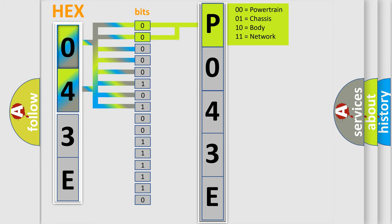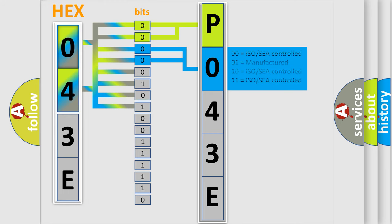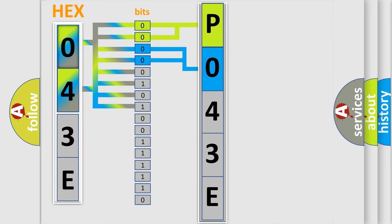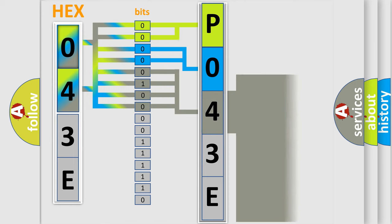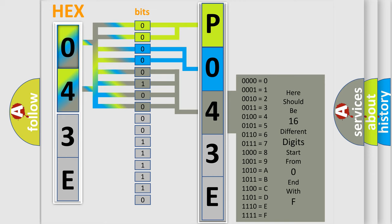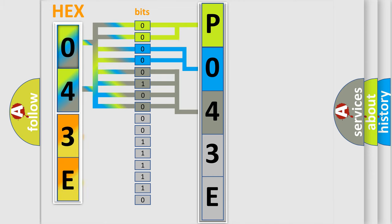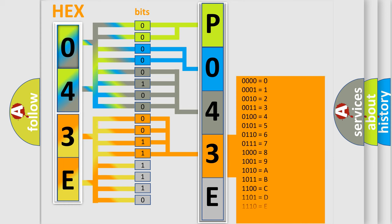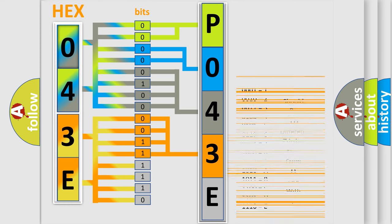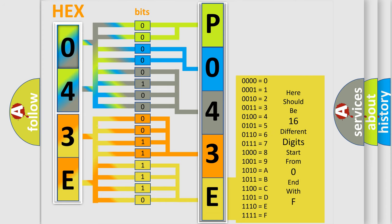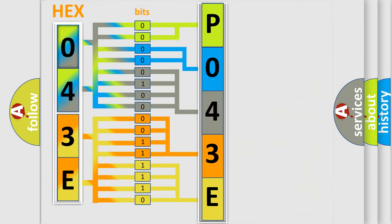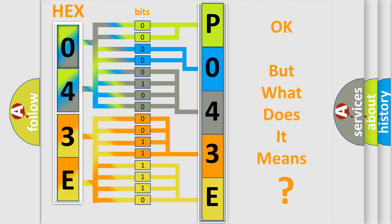The next two bits determine the second character. The last bits of the first byte define the third character of the code. The second byte is composed of a combination of eight bits. The first four bits determine the fourth character of the code, and the combination of the last four bits defines the fifth character. A single byte conceals 256 possible combinations. We now know in what way the diagnostic tool translates the received information into a more comprehensible format. The number itself does not make sense to us if we cannot assign information about what it actually expresses.